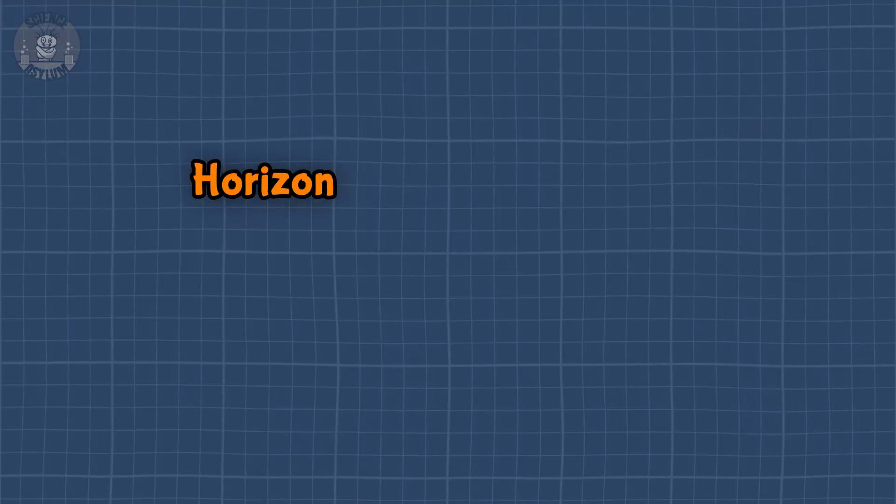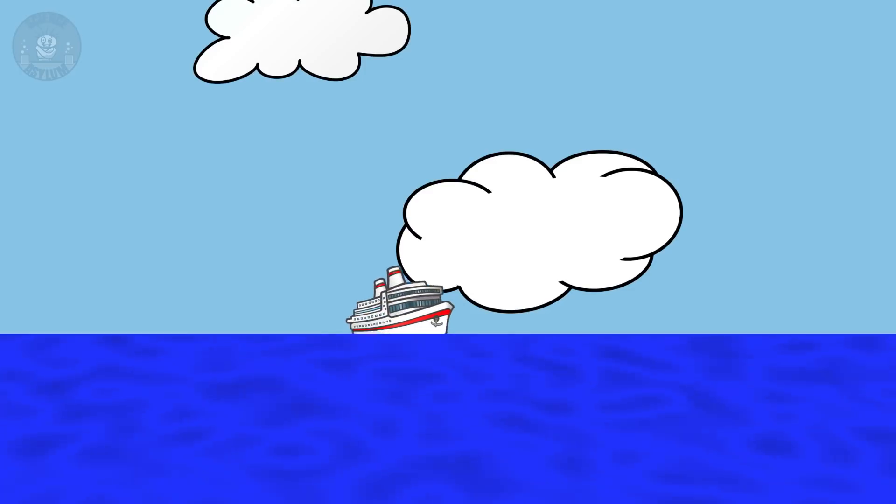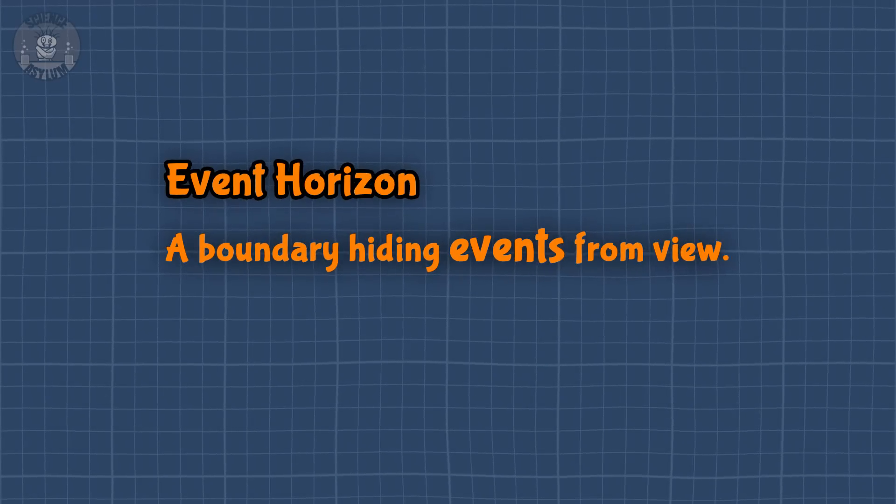Why do they call it a horizon? Excellent question! It's actually a very good name. A horizon is a boundary we can't see beyond, kind of like the horizon when you stand on the Earth. The curvature of the Earth is hiding those places from view. Likewise, an event horizon is a boundary hiding events from view, as in spacetime events. Yes, the same kind of events we've been talking about in these relativity videos. To the spacetime diagram!